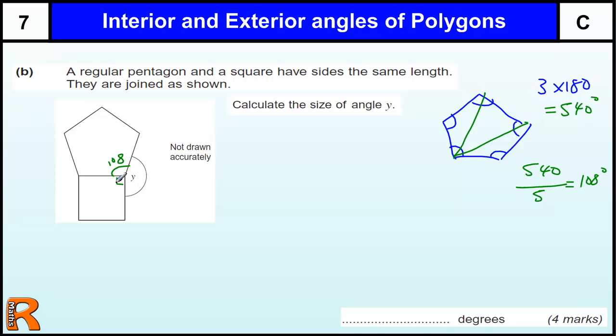And then we can work out Y because we can take that away from 180. So we've got 90 and 108. So we've got 360 minus 108 take away 90, and that will give us the answer which is 162.